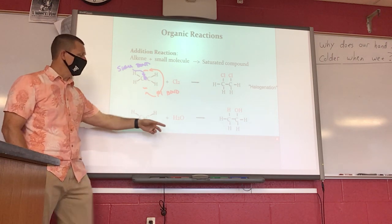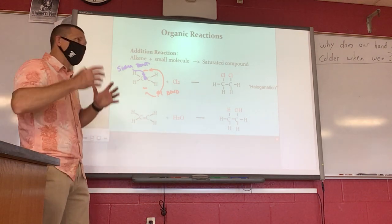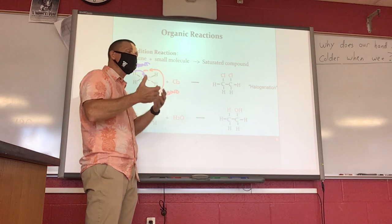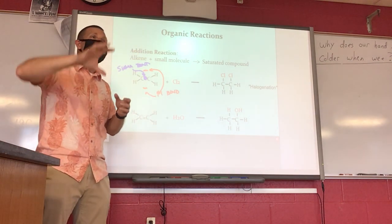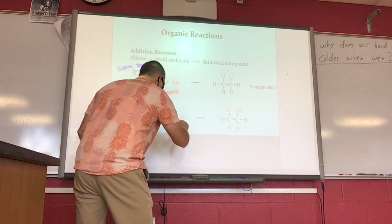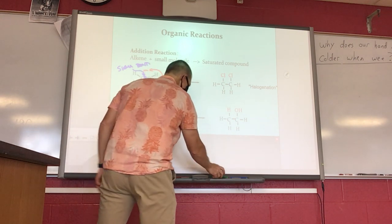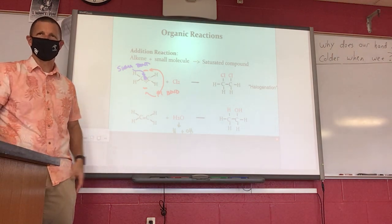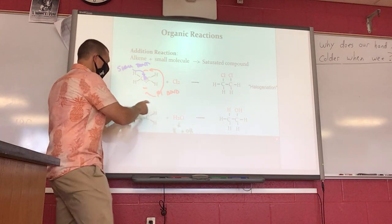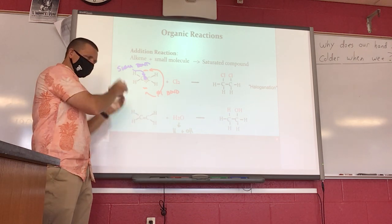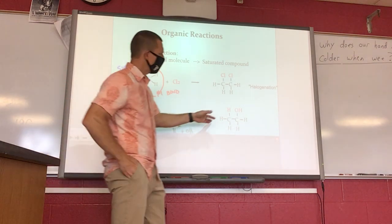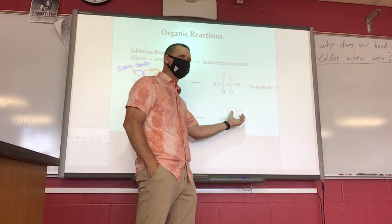Another example: the same unsaturated compound reacting with water. When you split water apart, the oxygen hangs on to one hydrogen, so you get H and OH. Those two do the same thing as the two chlorines — they attack the vulnerable pi bond. The hydrogen goes on one of the carbons, the OH goes on the other carbon, producing a compound with an OH functional group.